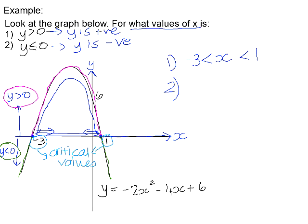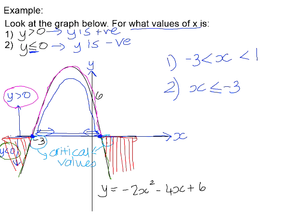For number 2, the values of x for which y is less than or equal to 0: there are two different places where that's happening — to the left of negative 3 and to the right of positive 1. So there are actually two parts to the solution. It happens where x is smaller than or equal to negative 3. I'm using less than or equal to because I'm including the x-intercepts, where y equals 0. And it also happens where x is greater than or equal to 1.